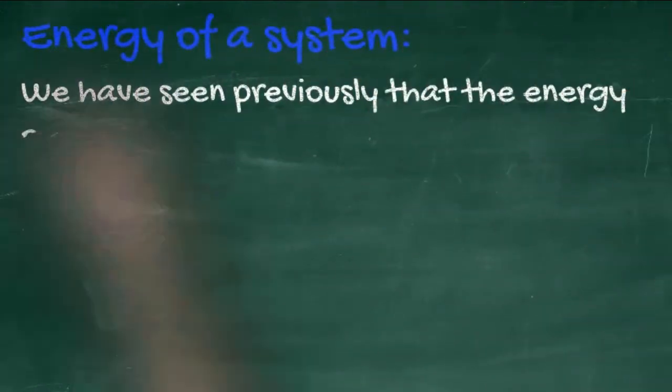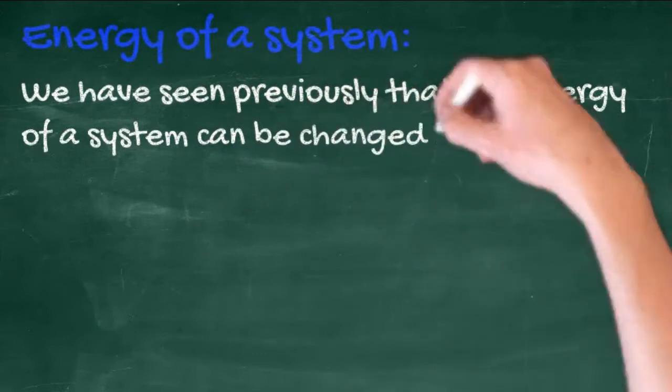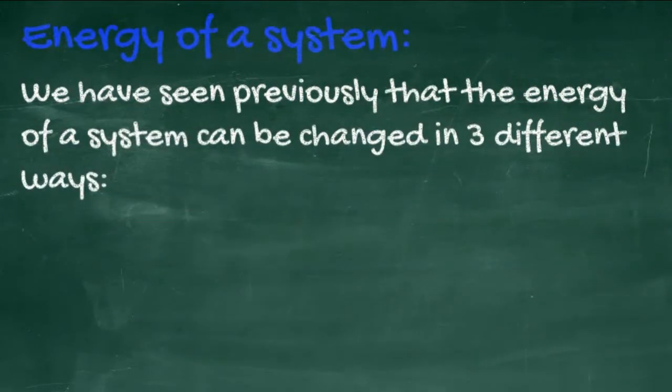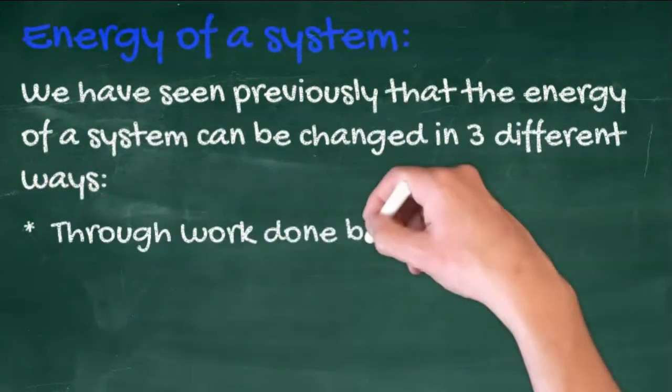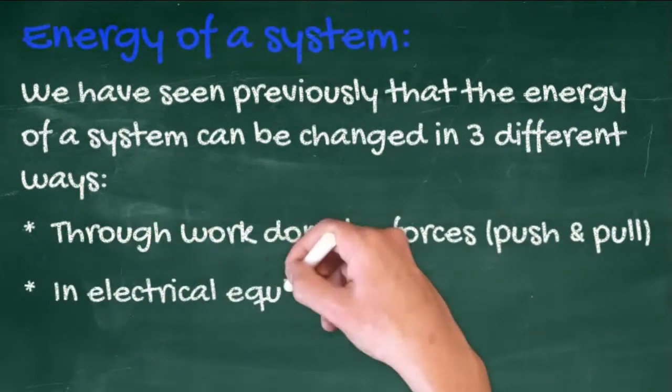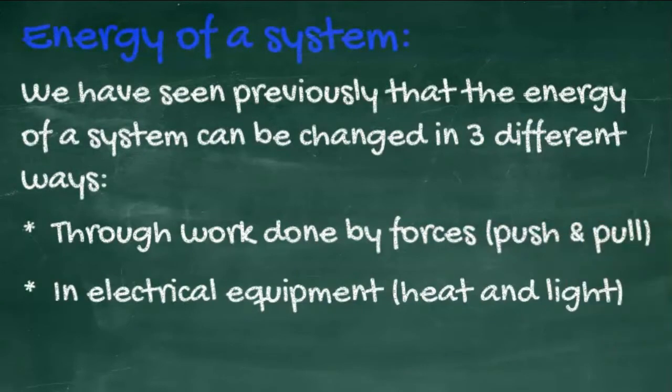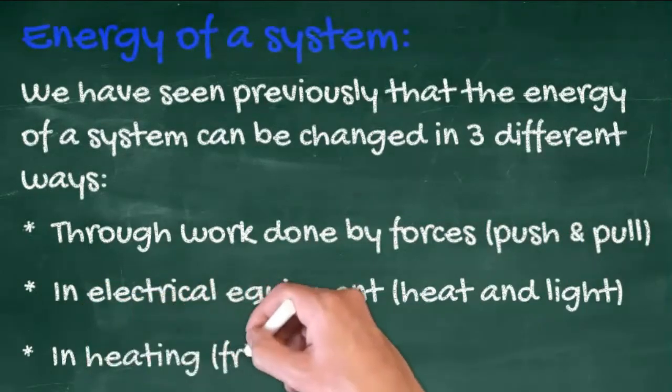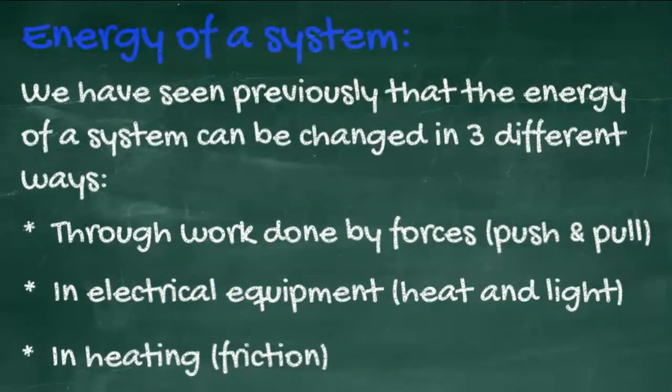We have seen in topic 3 that the energy of a system can be changed in different ways. The first, through work done by forces, that would be a push or a pull. Or in electric equipment, where electricity can be converted into heat or sound or light. And finally, through the heat of friction.